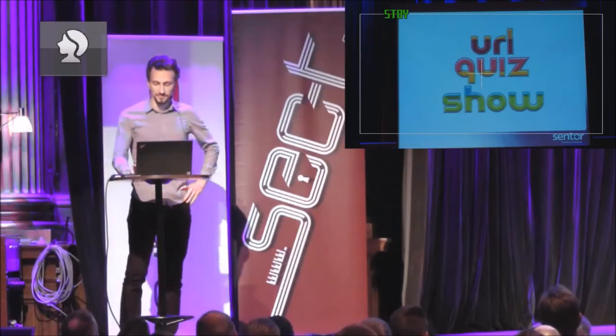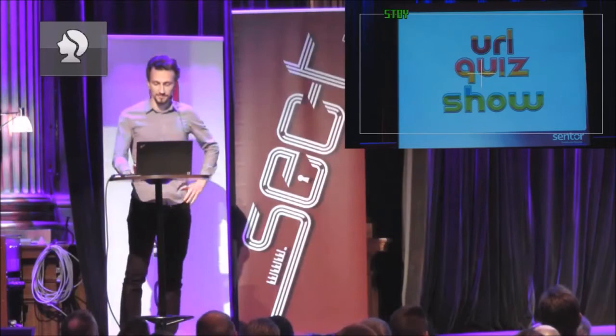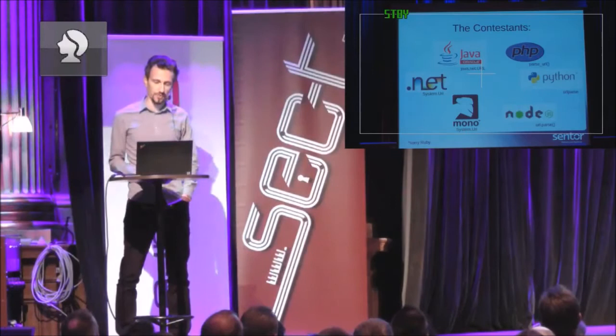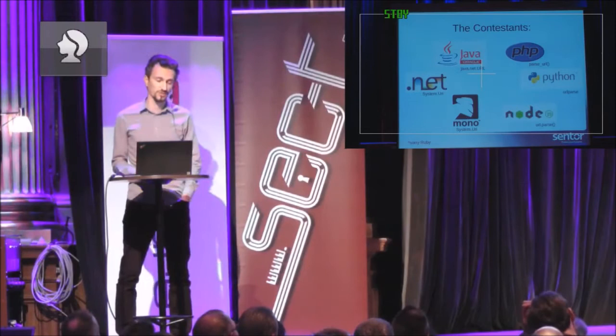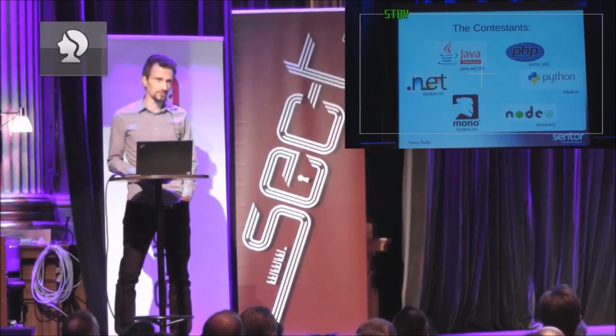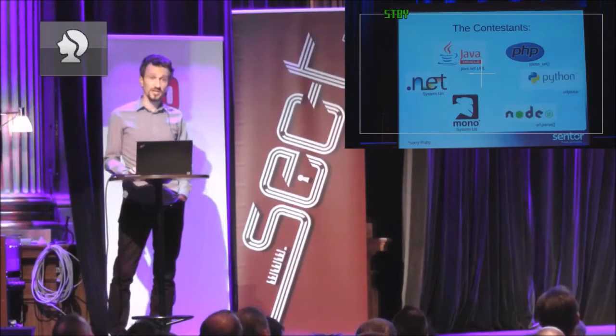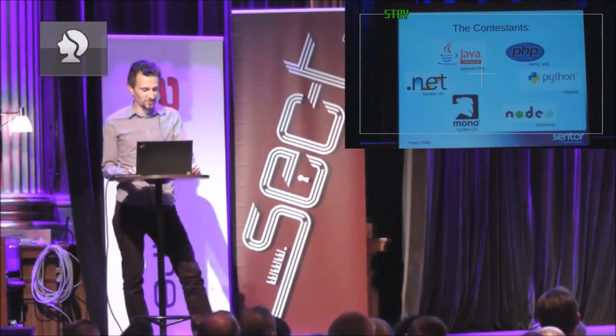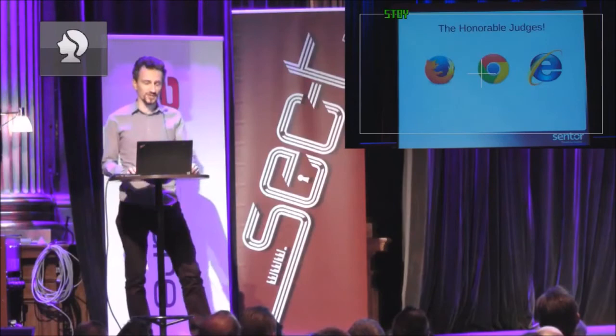So, the URL quiz show. We have the contestants: Java is bringing in the java.net URL class, PHP has the parse_url method, and .NET is coming in with System.URI. .NET's little brother, the open source version Mono, is also using the same class. Python is using urlparse, and Node.js is also part of this — because it's funny with JavaScript on the server side. Sorry about Ruby and Perl, because you didn't cut it this time. The honorable judges need no introduction.